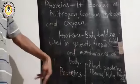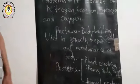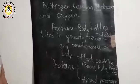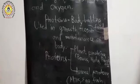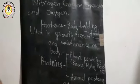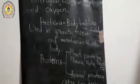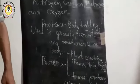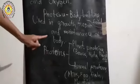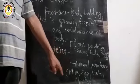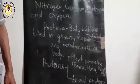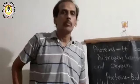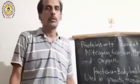Proteins are present in both plants and animals. Plant proteins are obtained from beans, nuts, peas, peanuts, and groundnuts. Animal proteins are obtained from milk, eggs, fish, and all meat products. Proteins are also used in making hemoglobin.